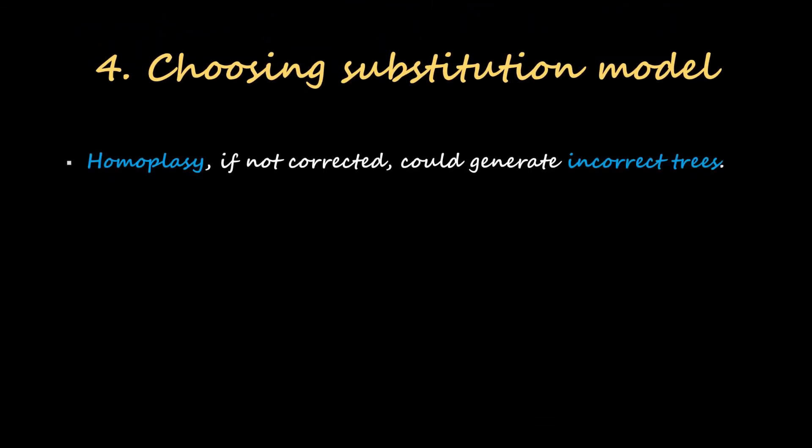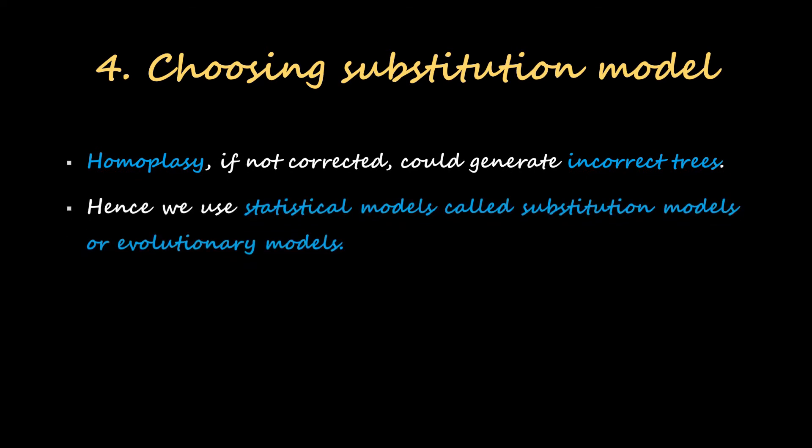Next is choosing substitution model. Homoplasy, if not corrected, could generate incorrect trees. Hence we use statistical models called substitution models or evolutionary models. Most commonly used models are Jukes-Cantor model and Kimura model. These are the two substitution models which we use to prevent the effect of homoplasy.